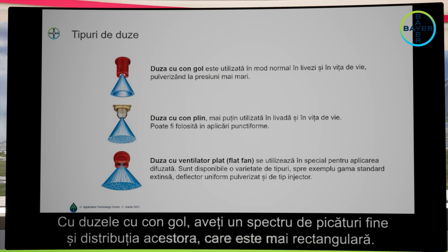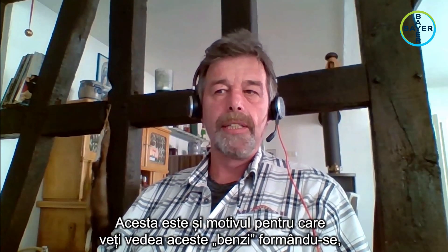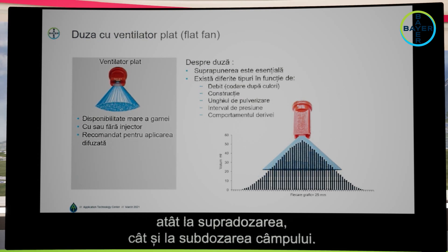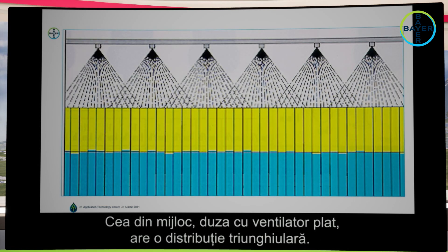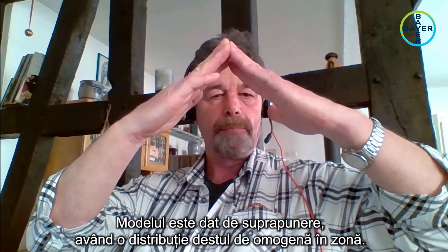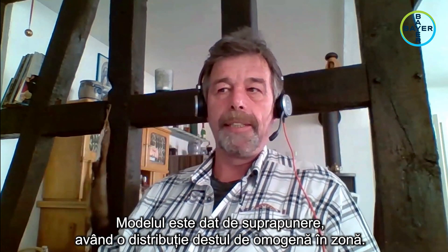With the holocon nozzle you have a fine droplet spectrum and a distribution that is more rectangular. This is also the reason why you'll see stripes with overdosing and stripes with underdosing in the field. The middle one — the standard flat fan nozzle — has a triangular distribution pattern, and by overlapping you get a very even distribution across the area.